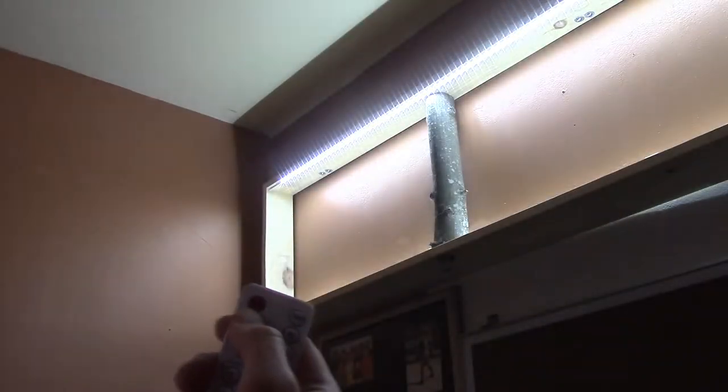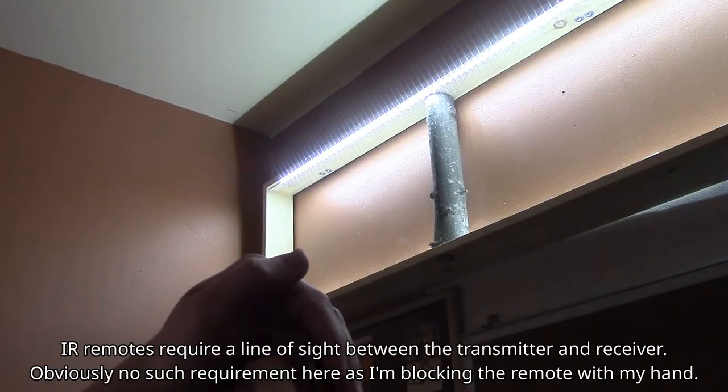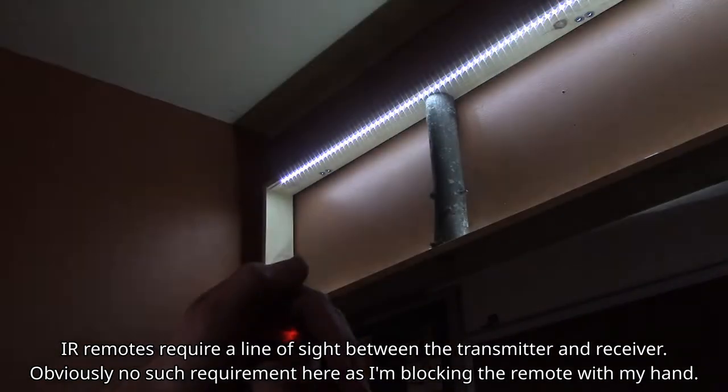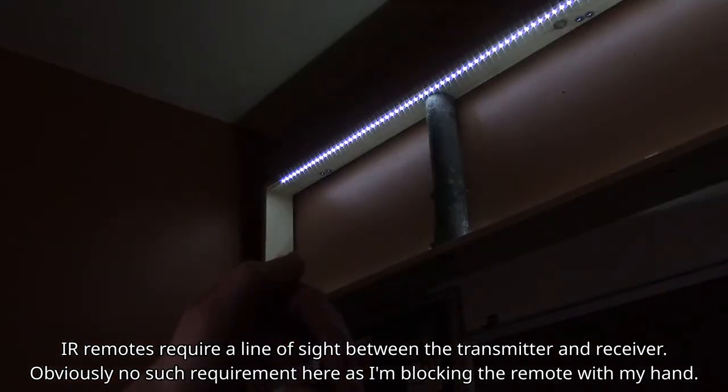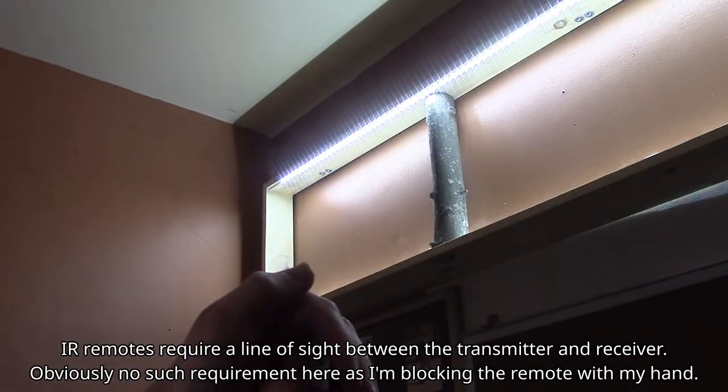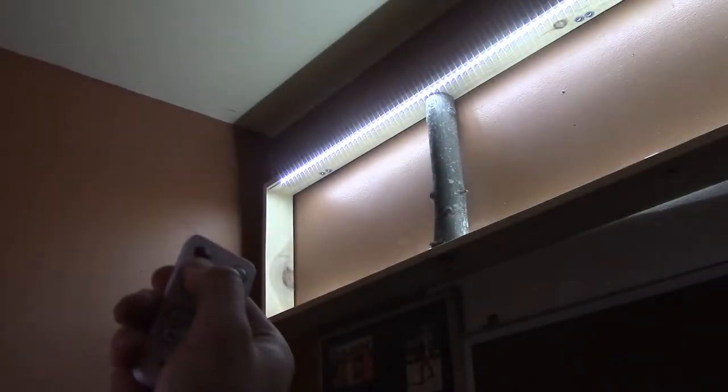The lights are pretty neat. One thing that I haven't seen done elsewhere is using an RF remote rather than an IR. Most LED strips require that you have an IR receiver visible someplace. When you want to turn them on or off, you have to point the remote in that general area. With an RF remote, you don't need to point at anything as it's communicating with a radio signal.